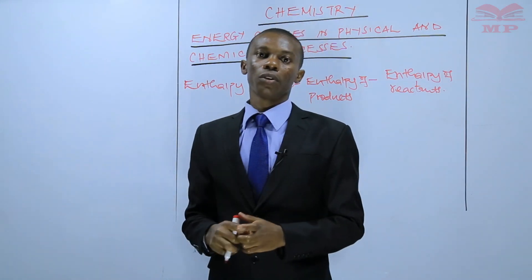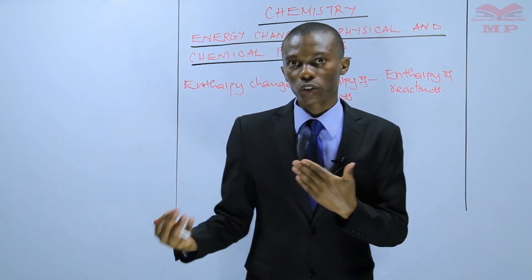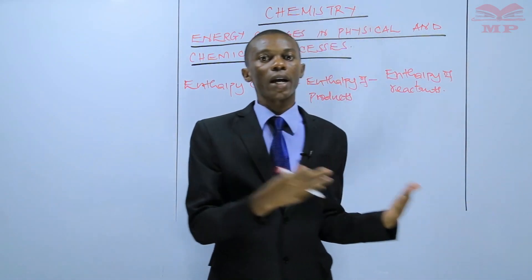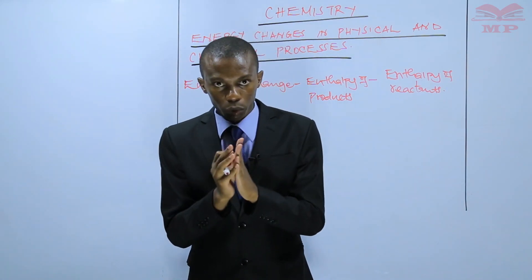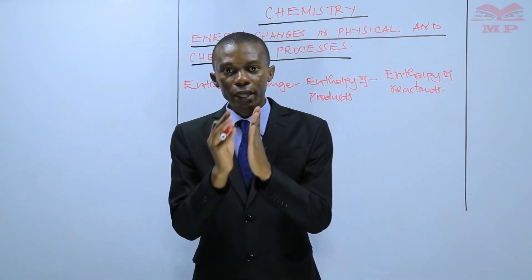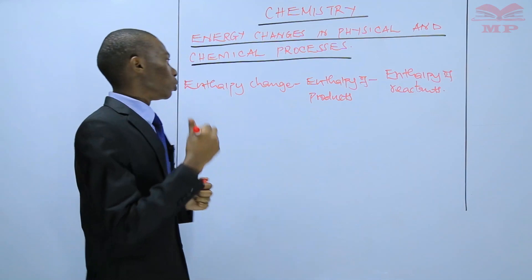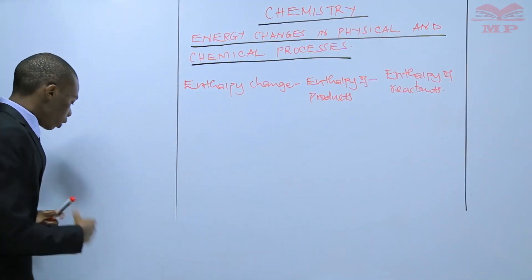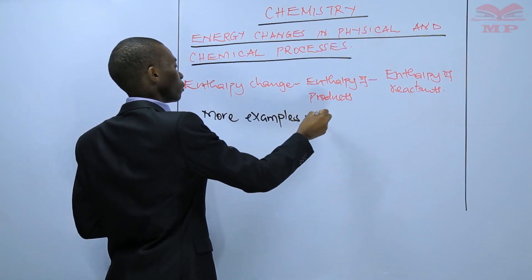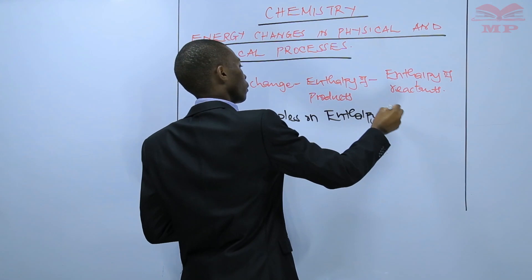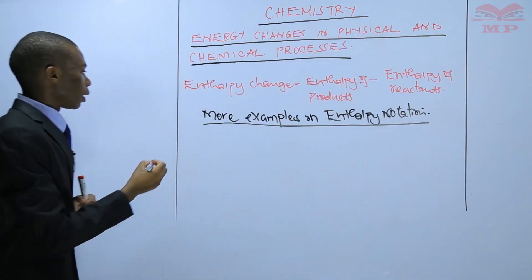We gave examples using ammonium nitrate and sodium hydroxide to illustrate endothermic and exothermic reactions. In this lesson, I want to give you more examples to show enthalpy changes and how you are able to write enthalpy notations. Our example number one is combustion.